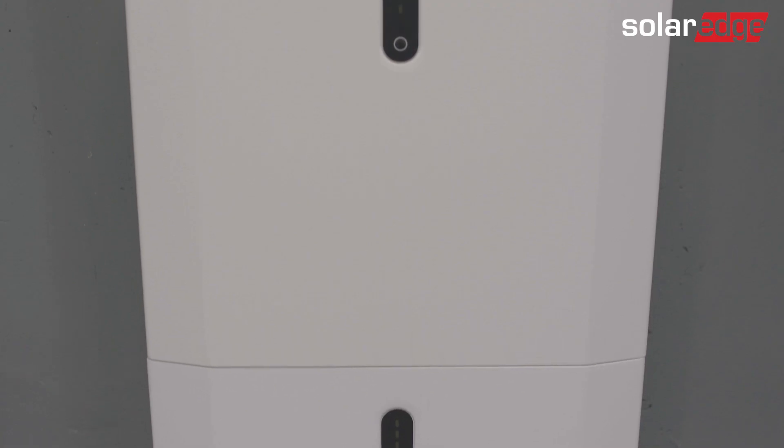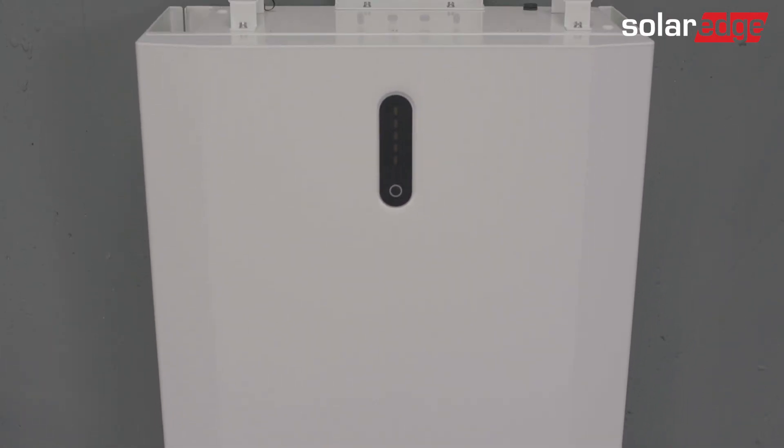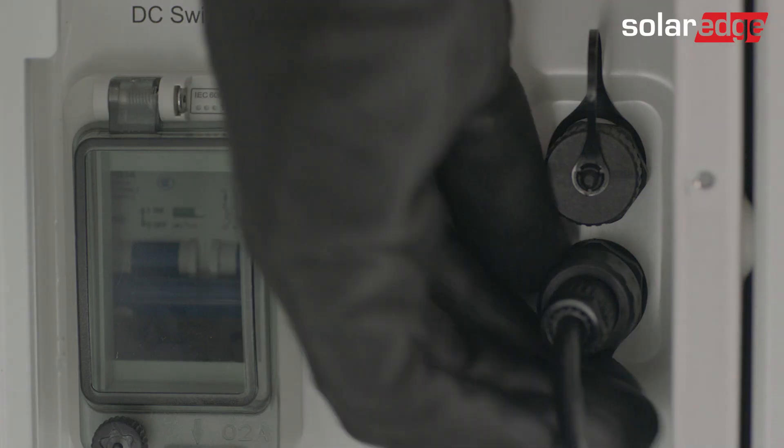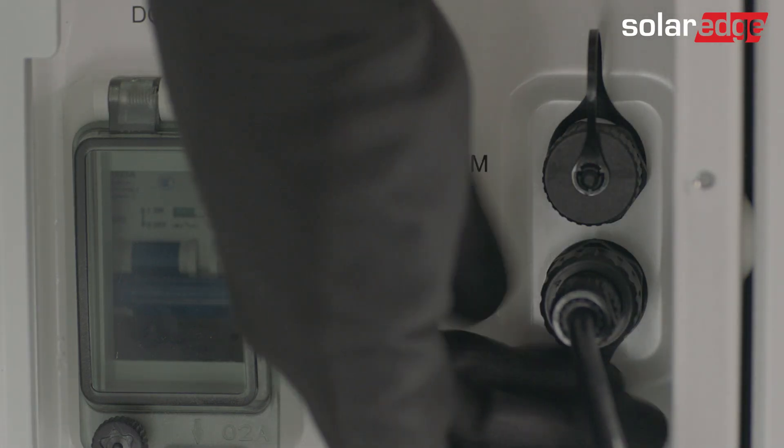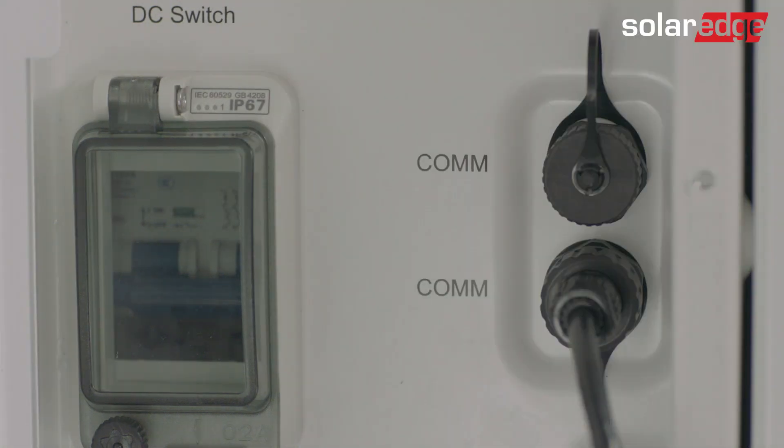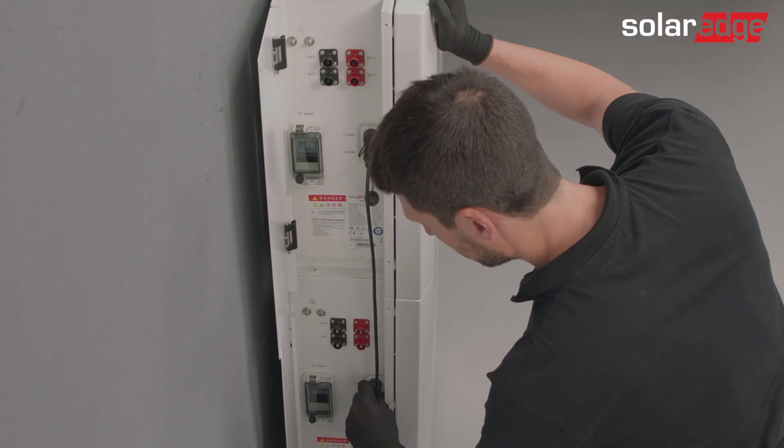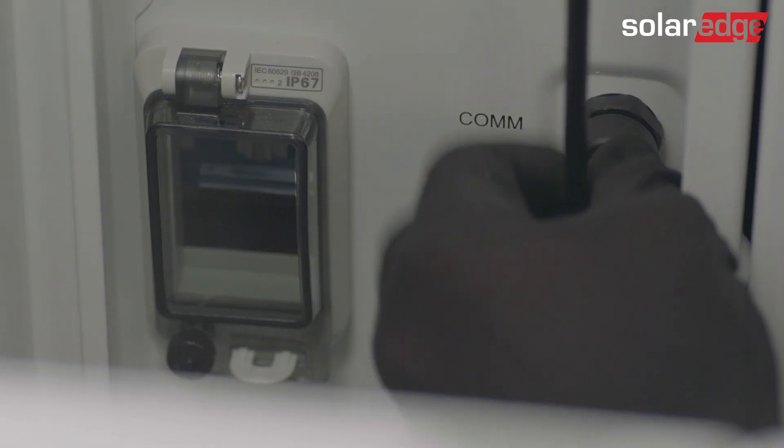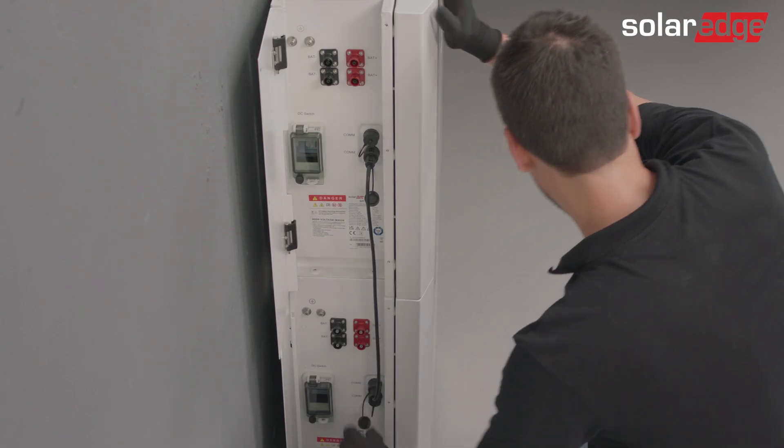Now let's start connecting the cables between the batteries in the first tower. The first cable will be the communication cable on the two batteries tower. Assemble it between the upper communication connector of the bottom battery to the bottom communication connector of the upper battery, and secure the cable once it is connected. Make sure the communication cable is secured along its length and tighten it first by hand, without using tools.